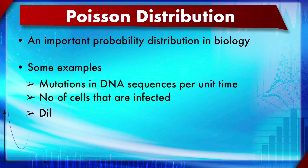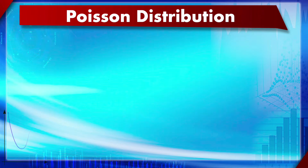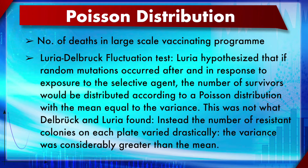Poisson distribution is a very important probability distribution in biology. Examples include mutations in DNA sequences, number of cells infected, and number of animals or plants at a specified location. We have also seen the Luria and Delbruck experiment, which used the variance-to-mean ratio to determine whether a process follows Poisson or not. They calculated that it was not Poisson - it was not a random process - and used this to infer results. Poisson distribution is very common across biology and sciences.